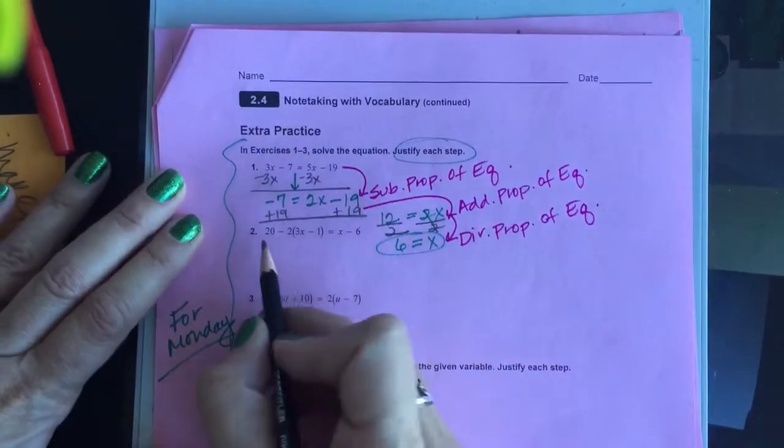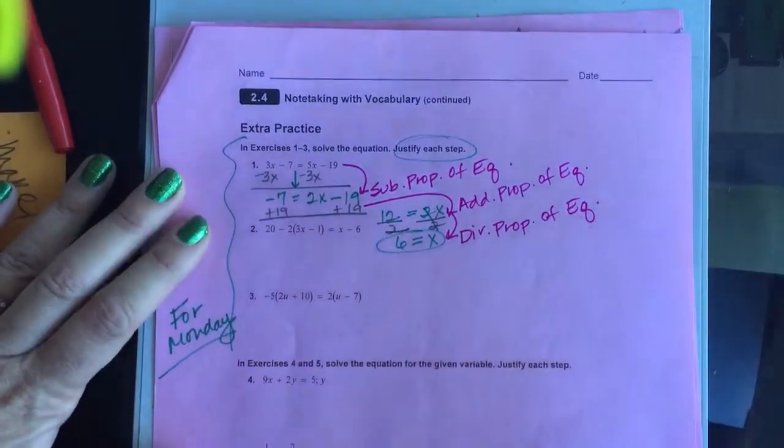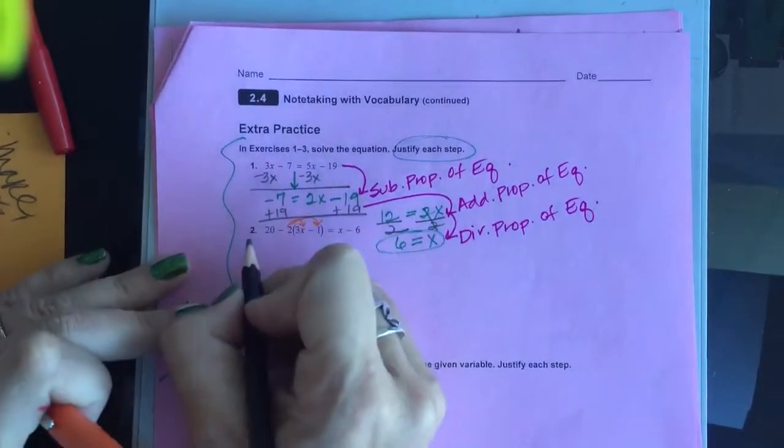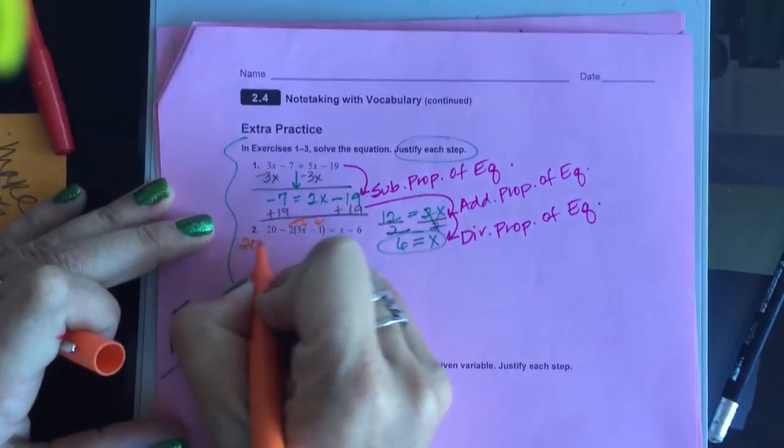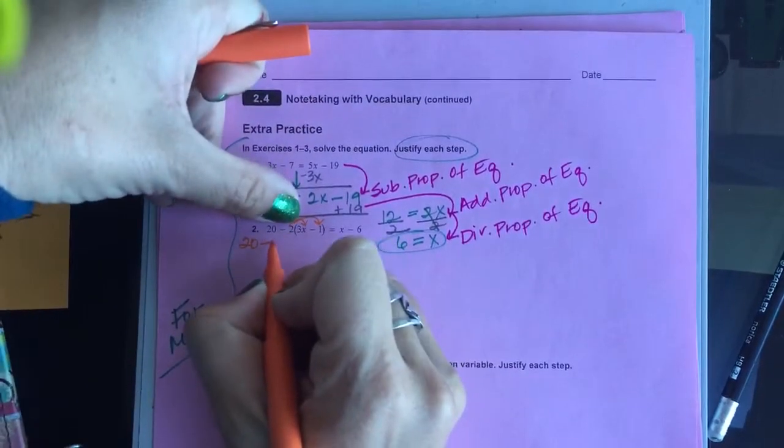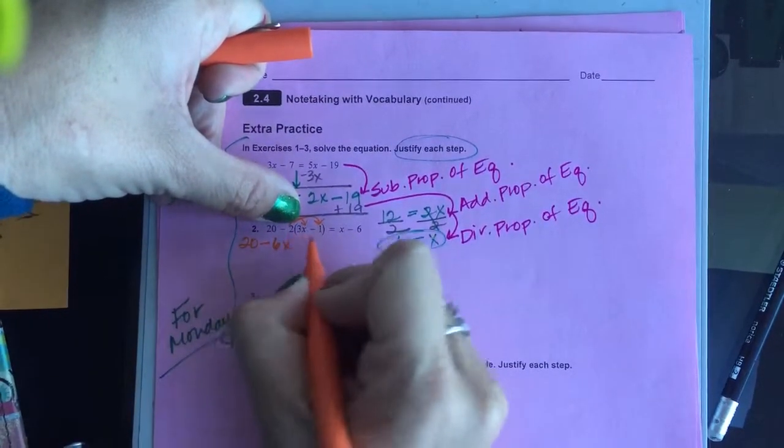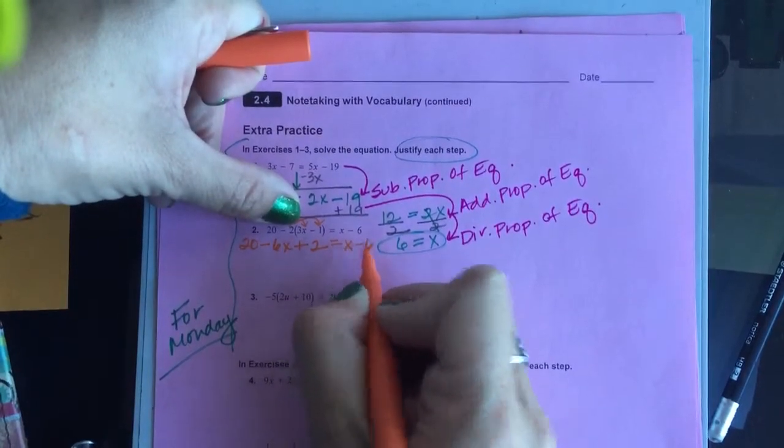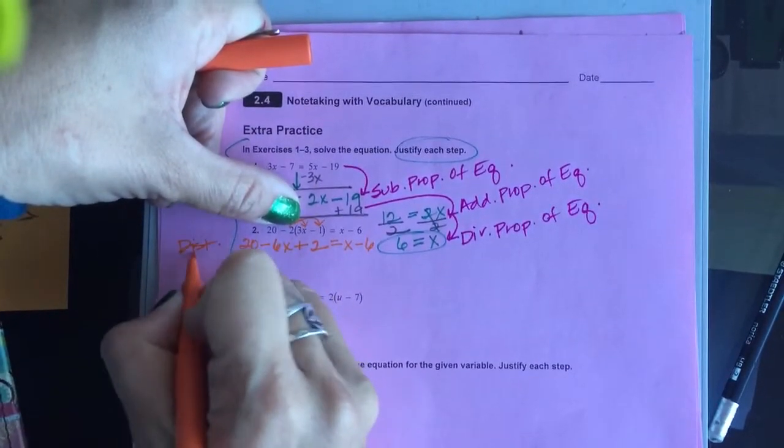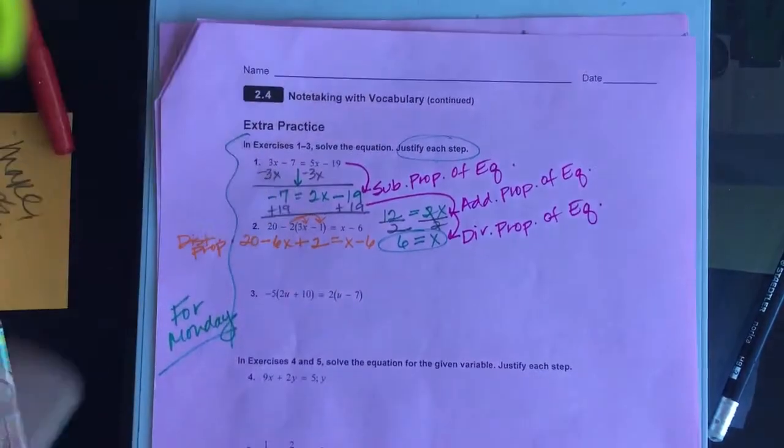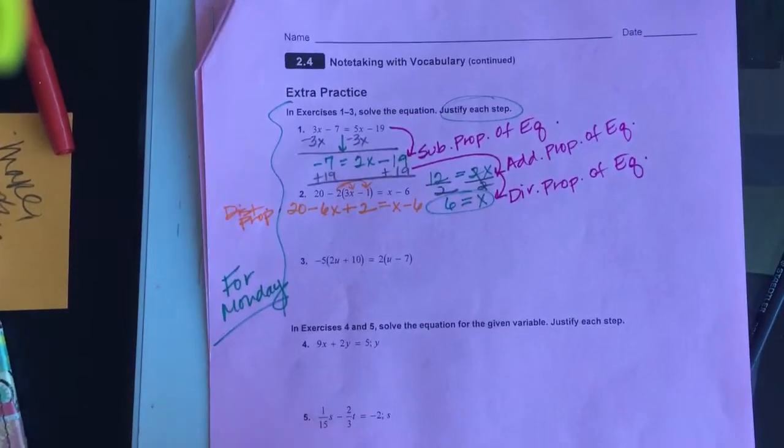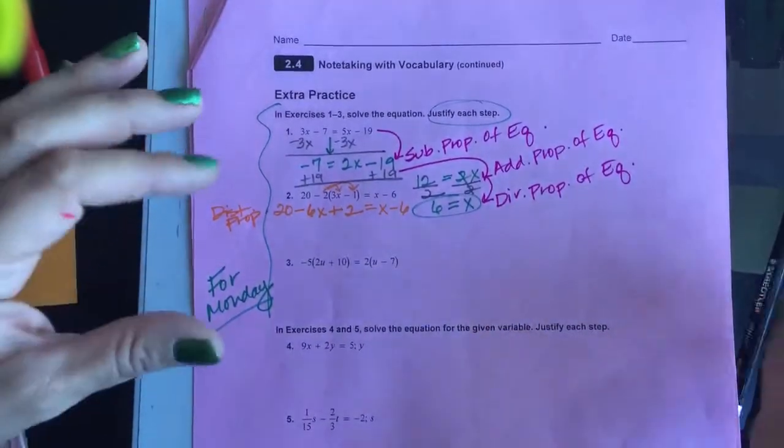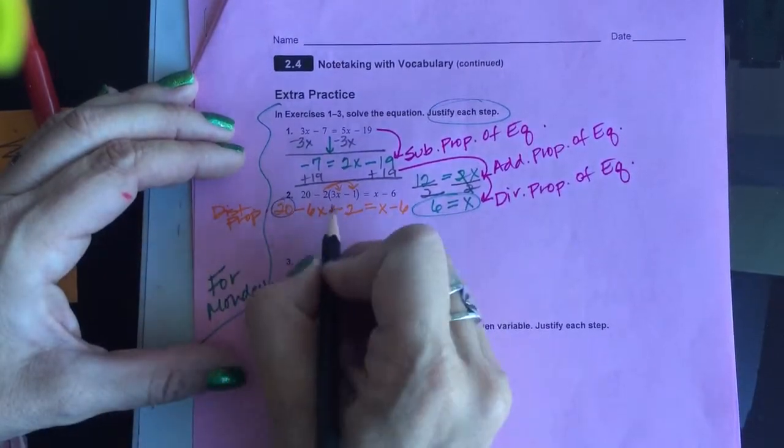Now, in number 2, I should have done this on another piece of paper, but that's all right. I'll just switch colors here. I'm going to have to justify my first step as distributive because I'm going to do 20 minus 2, negative 2 times 3x is minus 6x, negative 2 times negative 1 plus 2 equals x minus 6. That's distributive property right there. I'm simplifying by distributing. So from the first line to the second is distributive property.